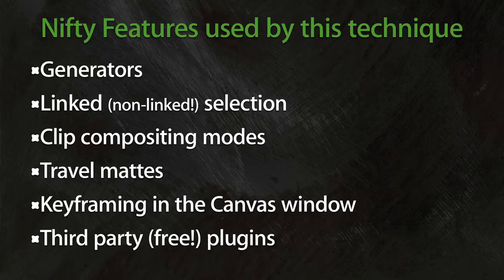We'll also look at keyframing in the canvas window. And in order to do the mosaic effect, we're actually going to be downloading a free third-party plugin. Normally I'm not big on doing things that are non-standard, but this particular set of plugins is darned useful. So I think everyone should have it and download it, and we're going to talk about how to download it.